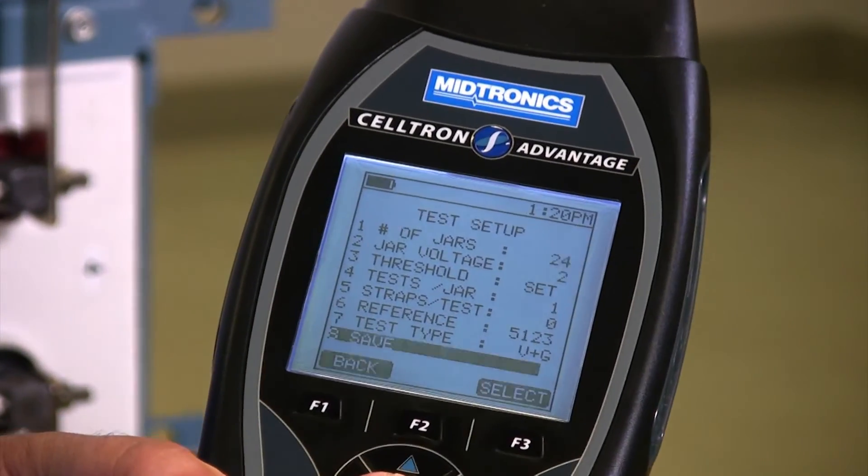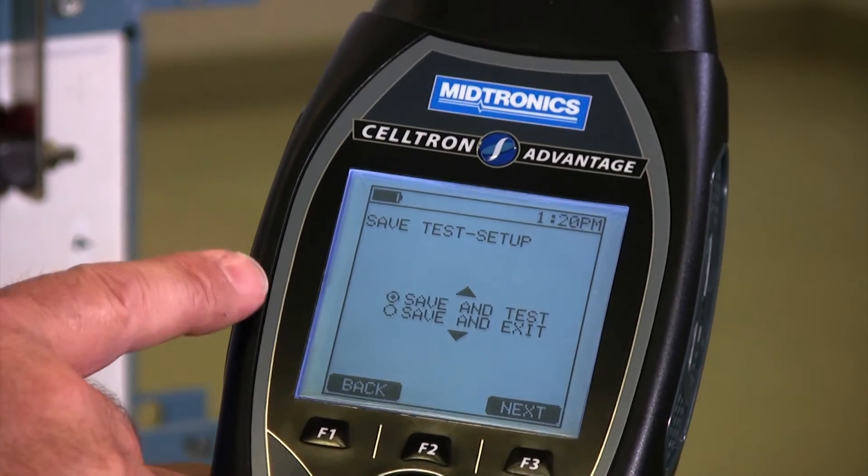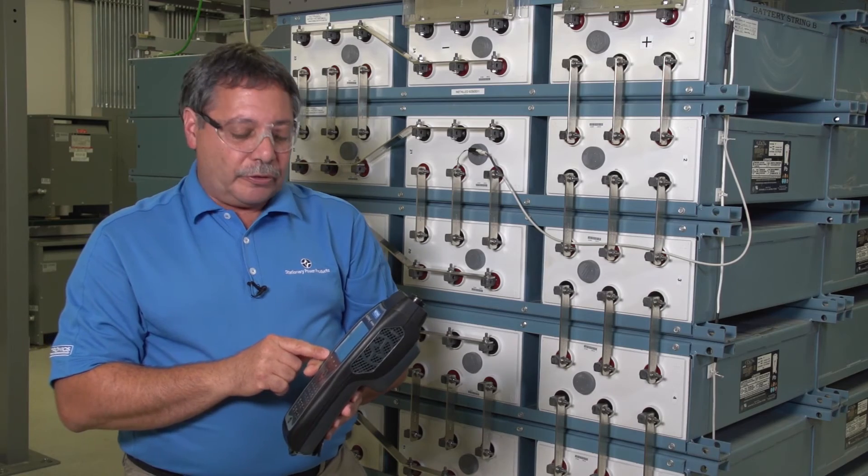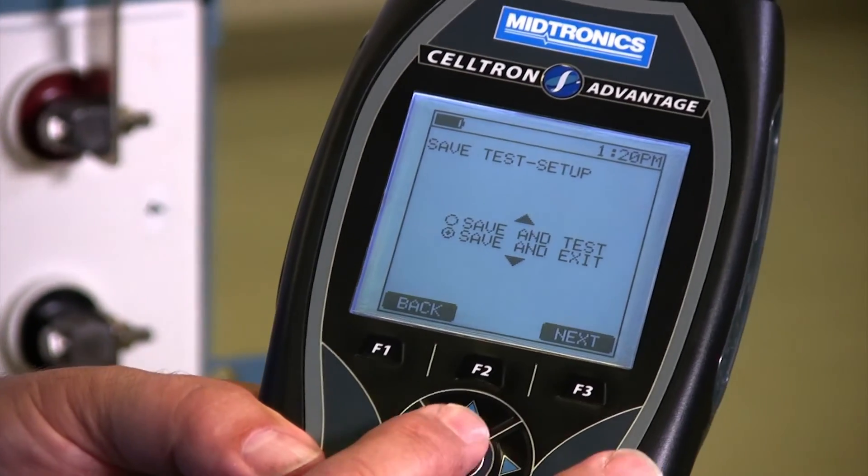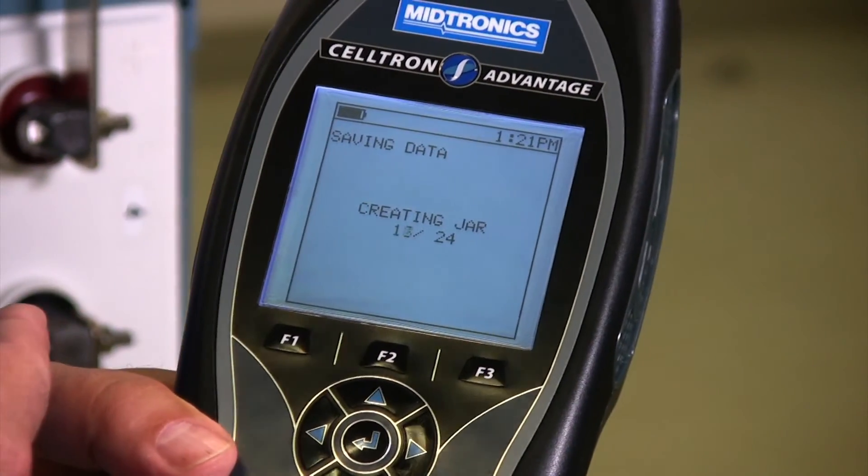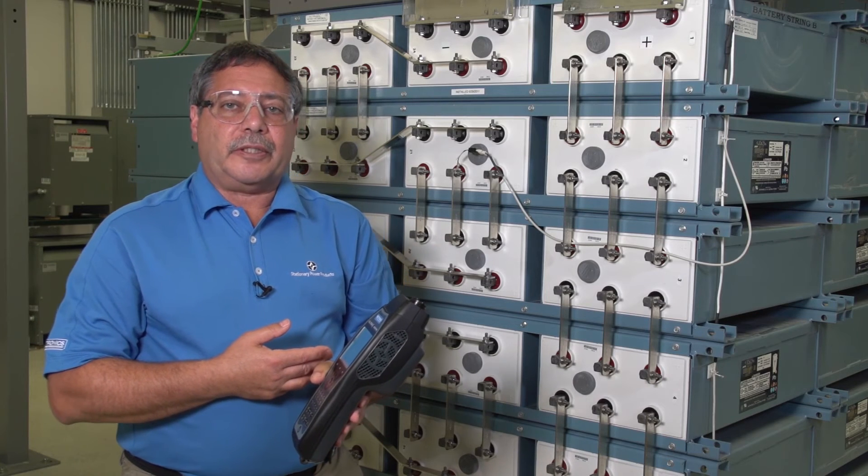And lastly, you can do save and you have the option of either save and test if you're ready to test right away. If you want to do some other setups for other strings you know you're going to be testing, you can go down to save and exit. It's going to save that setup with that site name in the tester's memory and then you can go on to set up your next string.